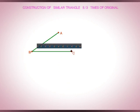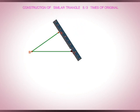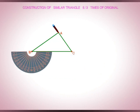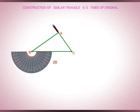Since the required triangle is 5 by 3 times of the given which is larger, so with B as center in anti-clockwise direction with some acute angle, draw a ray.